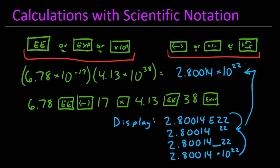While we have not yet discussed significant figures, the answer should be rounded off to three significant figures since each of the two given values also had three significant figures. The end result is an answer of 2.80 times 10 to the 22nd.